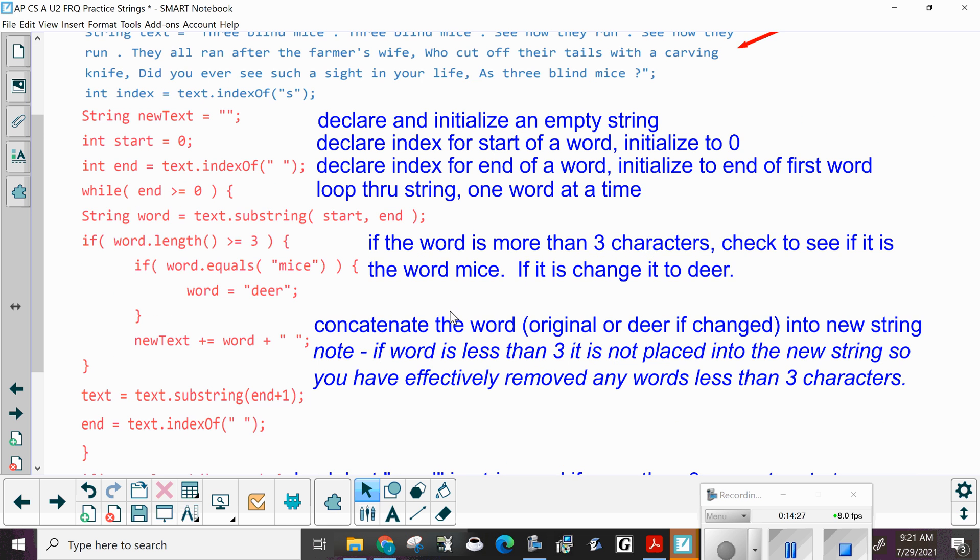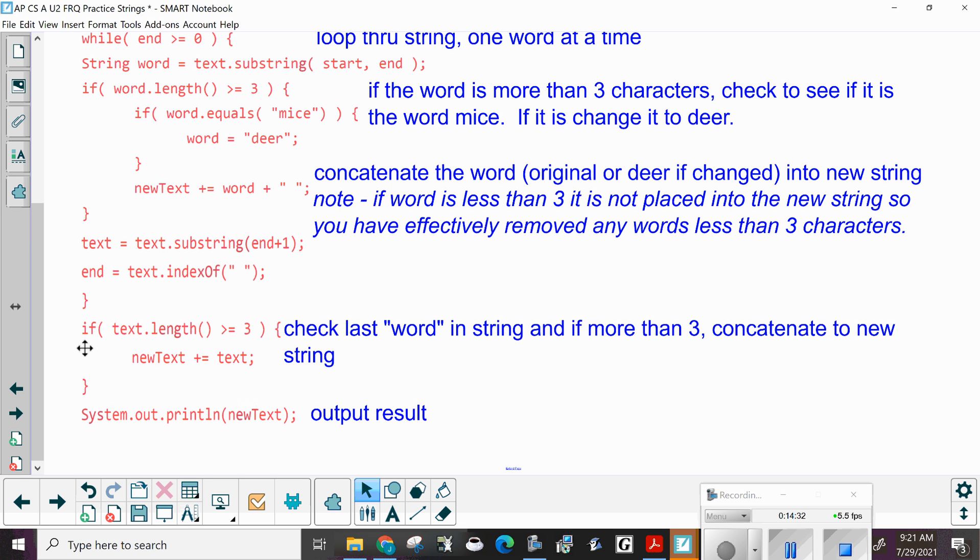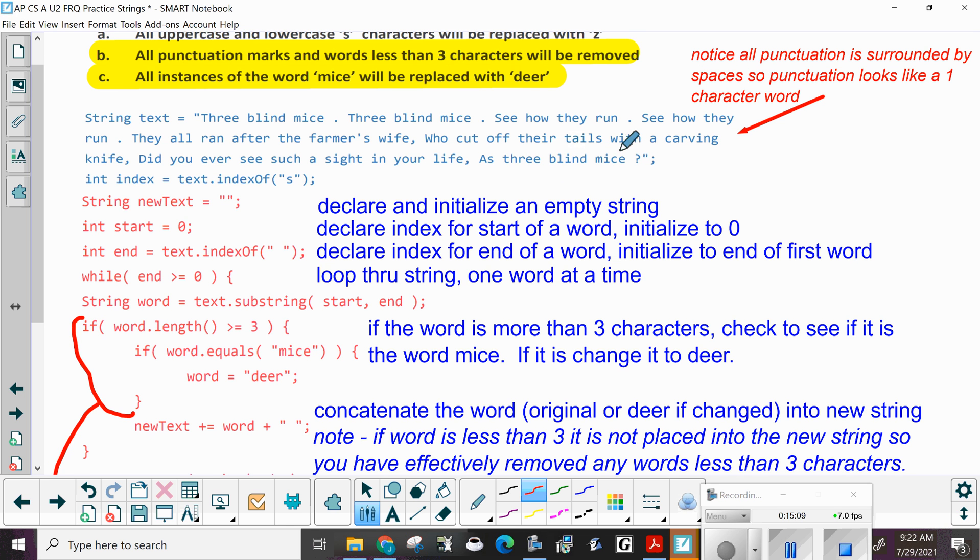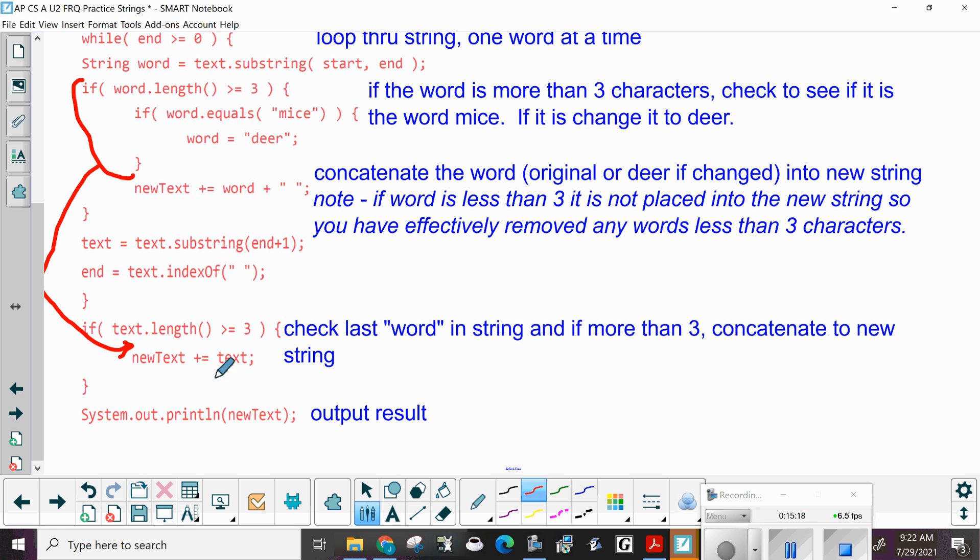All punctuation marks and words, so it doesn't remove the spaces, sorry. For some reason I thought it was removing spaces. The other thing is, if this is greater than or equal to three, check the last word, concatenate to new string, the one thing in here that I just realized is, you're going to need to add in, oh, do I have my pen here? We're going to need to add this right here. Because if this last word were mice, it doesn't happen to be, or actually it is, the last one happens to be a question mark, so it's not going to add anything, but if it were the word mice, then you want to concatenate it. Questions there. And then you can output the new text.